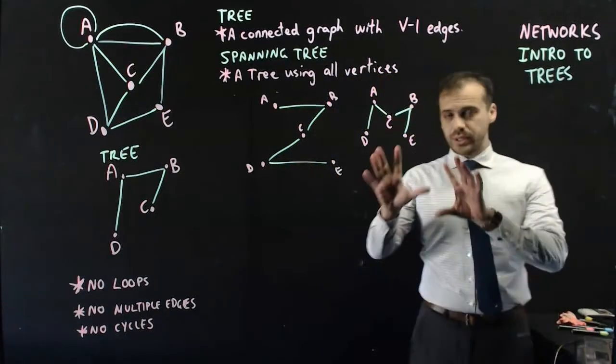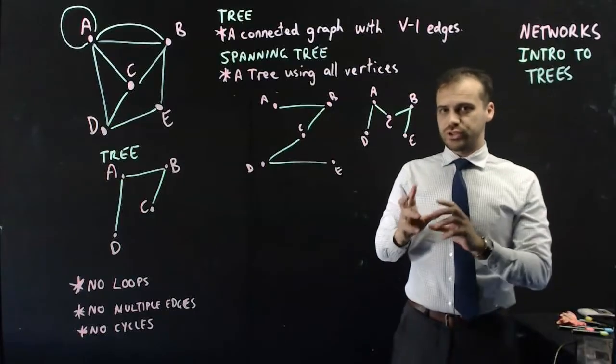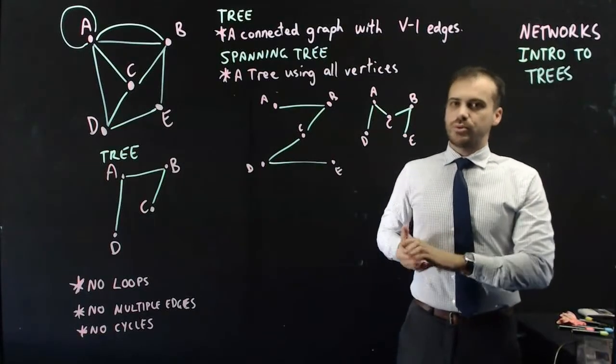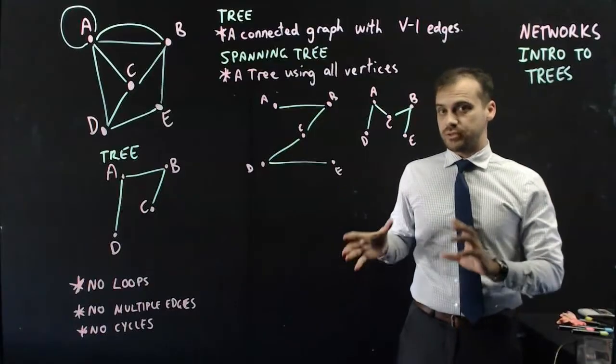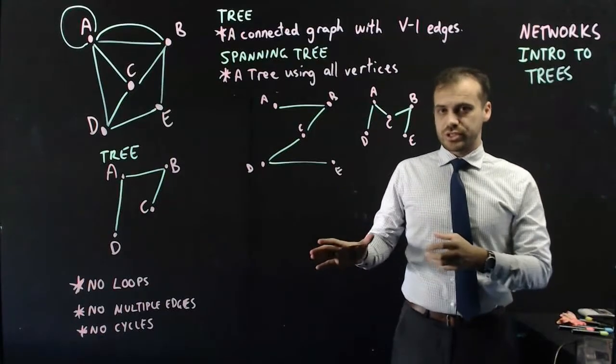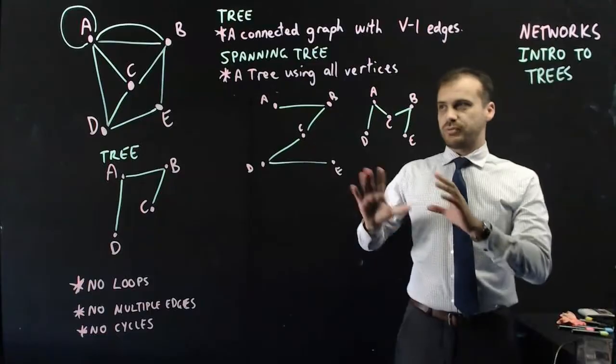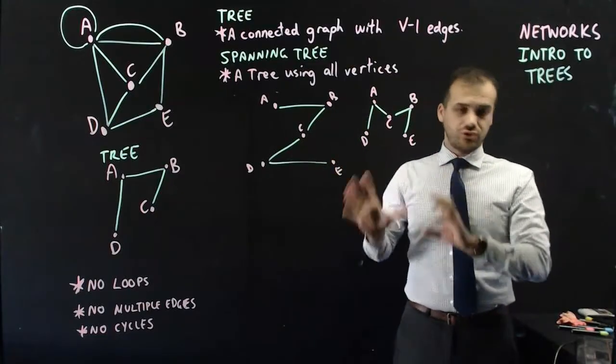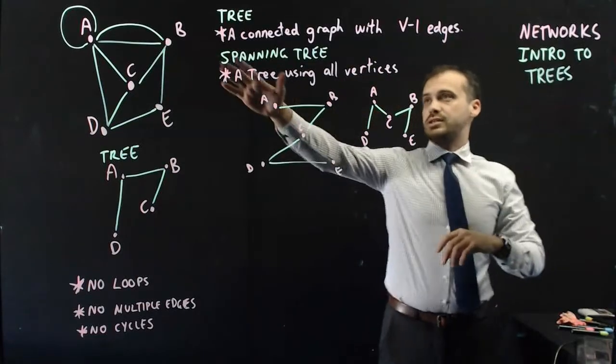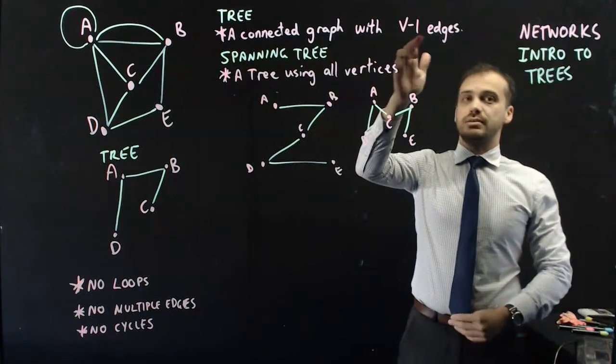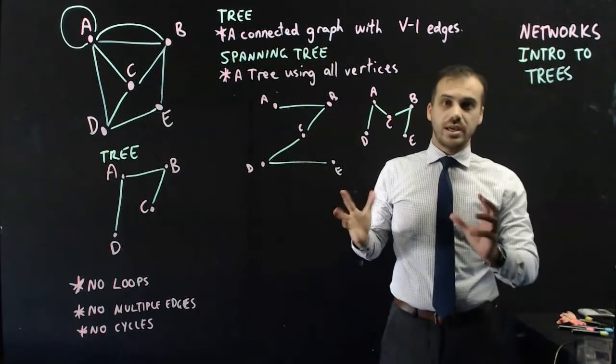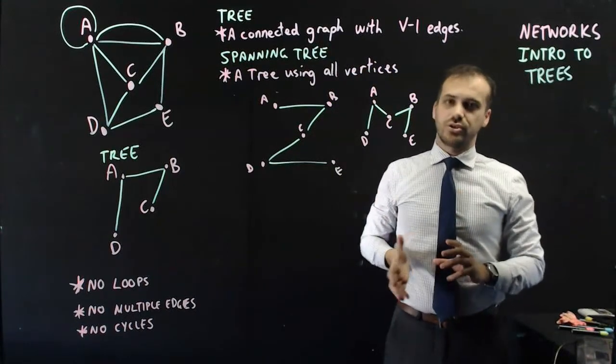On that note, we're going to leave it there. There's our introduction to trees. In a future video, we're going to talk about something called a minimum spanning tree. And there's some really interesting ways to work with those ideas. But for now, that's what a tree is. As long as you think of it as a connected graph with V minus one, vertices minus one edges, you can't really go too far wrong.